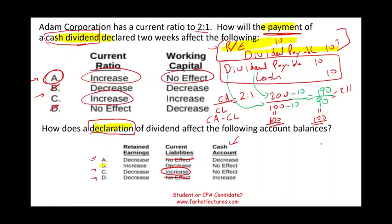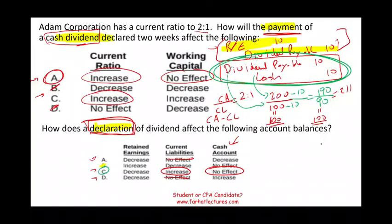The cash account is not affected by the declaration — just to confirm — because when you declare, there is no effect on cash. The cash account is affected when you pay, in the second entry. Therefore, the answer is C. Notice these two questions look intimidating, but they're based on this basic journal entry for cash dividends — this is the point I was making at the beginning of this recording.